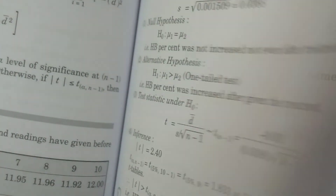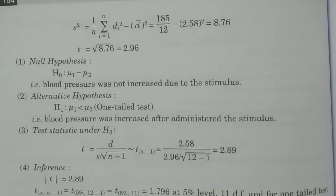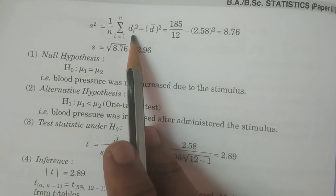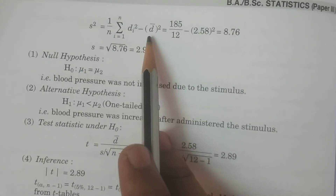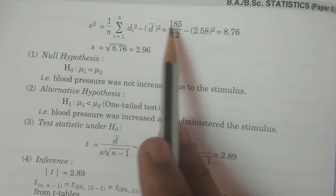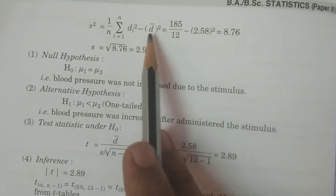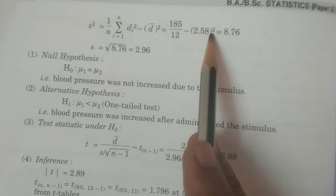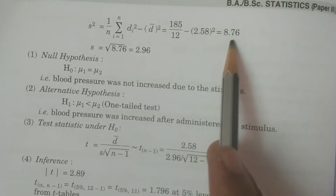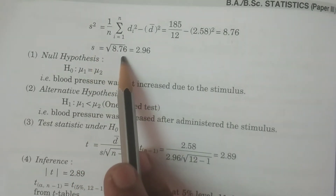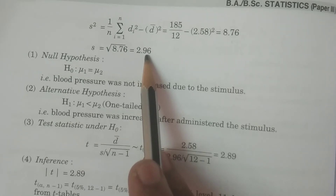After that, calculate S based on the formula. S squared equals 1 by N times summation Di squared minus D-bar whole squared. Summation Di squared is 185 divided by N equals 12, minus D-bar 2.58 squared. If you calculate this value, you get 8.76. The square root of 8.76 is 2.96, so S equals 2.96.